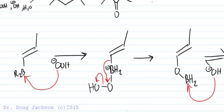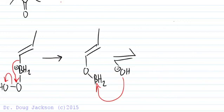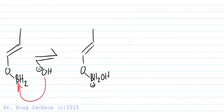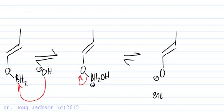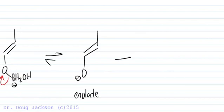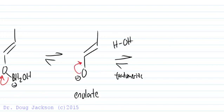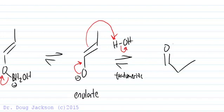Then we lose a hydroxide. From this point on we consider ourselves to be at equilibrium after the irreversible step. We add to the empty orbital of boron forming another complex — remember the negative one formal charge on boron. As we add hydroxide, we form another negative one formal charge on boron, and this boron complex can leave, dumping its electrons onto oxygen, forming our enolate. The enolate can tautomerize in basic conditions, forming a carbonyl by breaking the pi bond carbon to carbon, which then grabs a hydrogen from water, and we form our aldehyde.